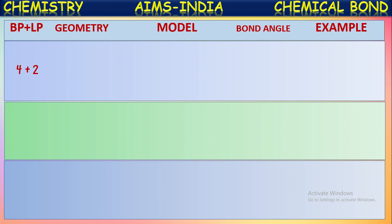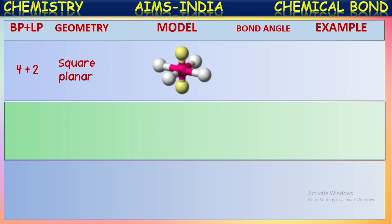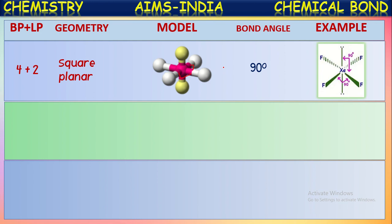For a molecule with four bond pairs and two lone pairs: the shape will be square planar. Four bond pairs come into the same plane along with the central atom, and the two lone pairs are above and below the plane. Between any two bond pairs the bond angle will be 90 degrees since they are in the same plane maintaining equal distances. The example for the molecule having square planar shape is xenon tetrafluoride XeF4, where central atom xenon has four bond pairs and two lone pairs — the four bond pairs in the same plane give 90 degree bond angles.